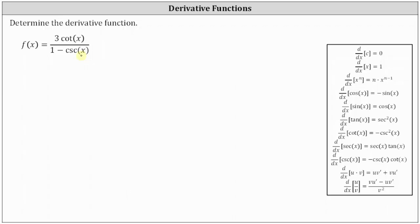The quotient rule is shown here on the bottom right. Where if the numerator is the function u and the denominator is the function v, then the derivative of u divided by v with respect to x is equal to u times v prime minus v times u prime, all divided by v squared. Or we can say the derivative is equal to the denominator times the derivative of the numerator, minus the numerator times the derivative of the denominator, all divided by the denominator squared.